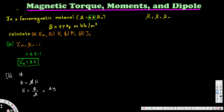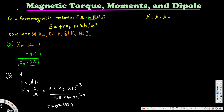The magnetic field B is 4y az times 10 to the power of minus 3 (because it's milli). Dividing by mu, which is 4.5 times mu-naught (4π × 10⁻⁷), gives us H equals 707.355 y az amperes per meter.